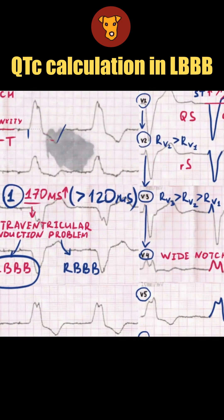An important consideration is QT interval measurement in the case of left bundle branch block, because a high QRS duration can overestimate the QT interval. First, measure QT by the tangent method. QT is equal to 3 large boxes and 6 small boxes, or 420 ms.